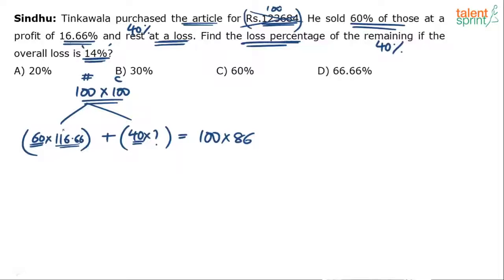60% were sold at profit of 16.66. Cost price is 100. So profit of 16.66 makes it 116.66. Overall, all were sold at 14% loss. So if cost price is 100, 14% loss will make it 86. Remaining 40% were sold at what price? So selling price of 60 articles plus selling price of 40 articles should be equal to selling price of all the articles. That's the whole idea. This equation is selling price. Overall selling price.